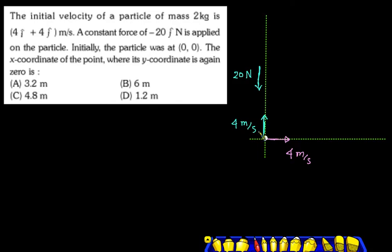The x-coordinate of particle when y-coordinate is again 0. So the x-component is like this and y-direction is like this. The force and mass will find acceleration, and there will be a second equation for kinematics.